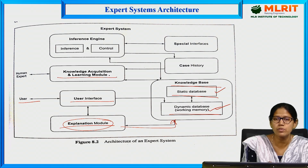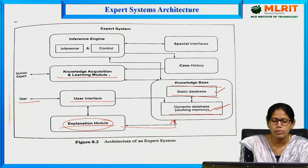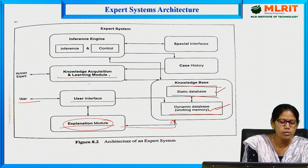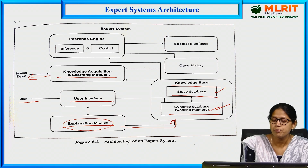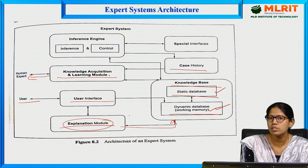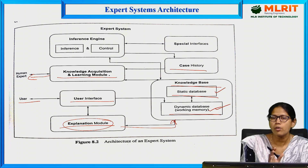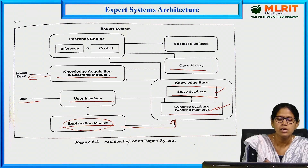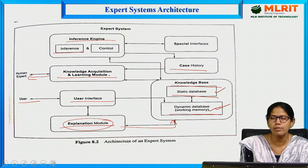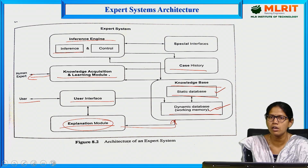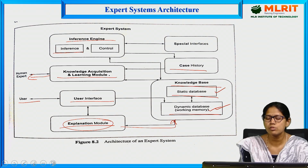Next, knowledge acquisition is one of the important phases — a learning module that interacts with the human expert to gain knowledge. There is also a case history which stores case files: how problems are solved, with problems and solutions placed into the case history. The inference engine contains two types: inference mechanism and control strategies such as forward chaining and backward chaining.